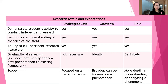As we can see from the chart, there are several criteria expected depending on one's degree program: to demonstrate students' ability to conduct independent research, to demonstrate an understanding of theories of the field, and the ability to cull pertinent research literature — these are expected of all degree programs.